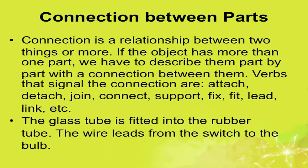Connection is a relationship between two or more things. If an object has more than one part, we describe them part by part with the connection between them. Verbs that signal connection include: attach, detach, join, connect, support, fix, fit, lead, link, etc. For example: 'The glass tube is fitted into the rubber tube.' 'The wire leads from the switch to the bulb.' The key connection words here are 'fitted' and 'leads.'